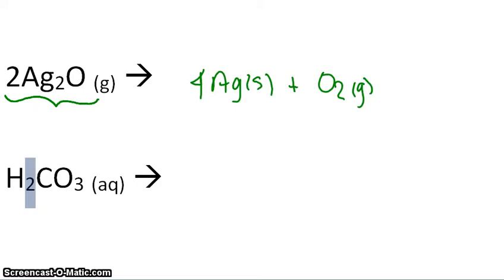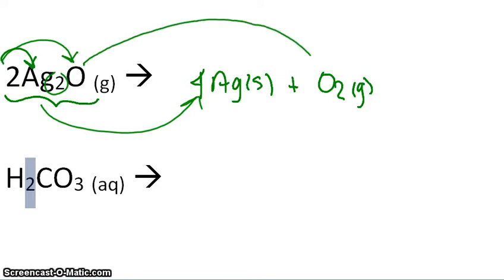And we know this reaction is correct because on this side we have two Ag2s, so that's four. And we have two oxygen, which corresponds to our O2 gas. So we've kept the same number of elements on each side.